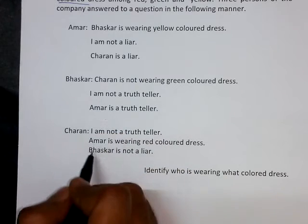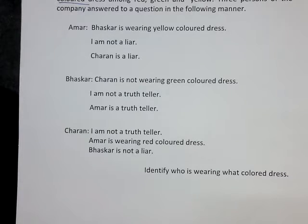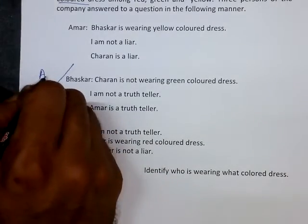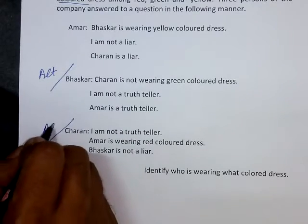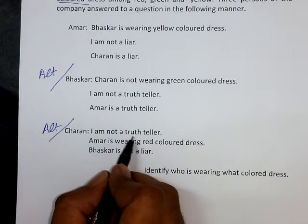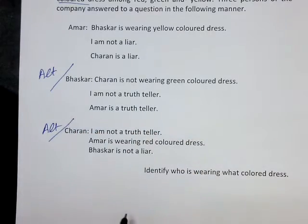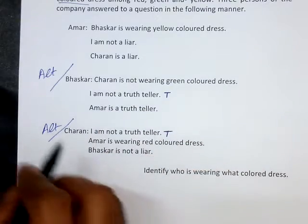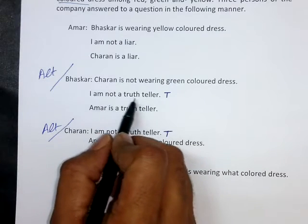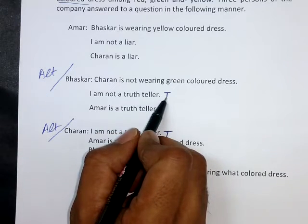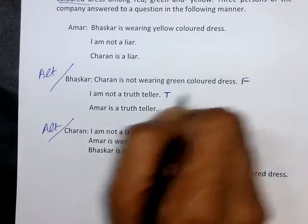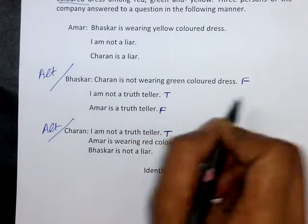Which means in this particular question we can adopt the trigger statement approach. Bhaskar and Charan, both of them, are alternators because they are making the statement 'I am NOT a truth teller.' This statement is true because the alternator is telling that the person is not a truth teller — he is not a truth teller — which is true.